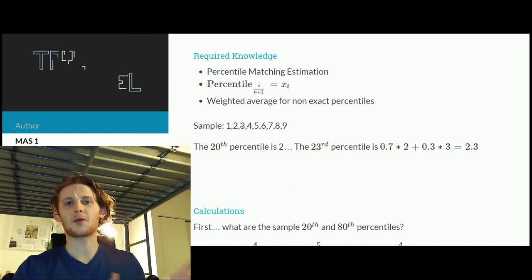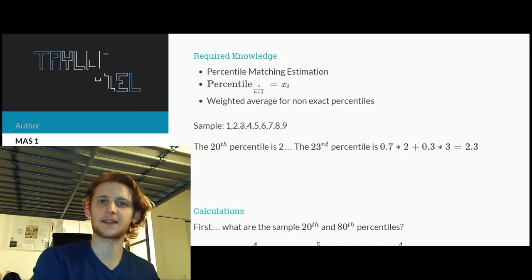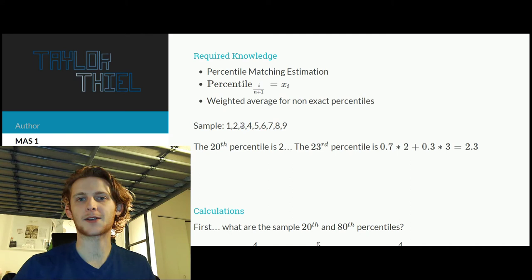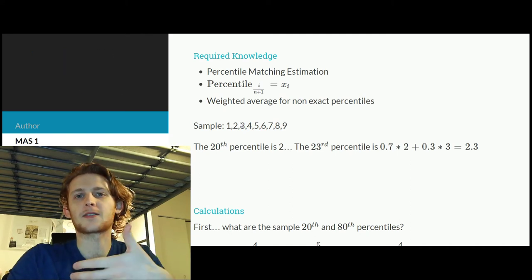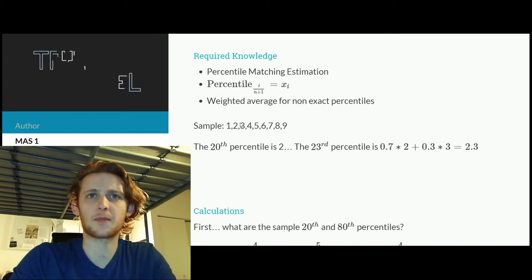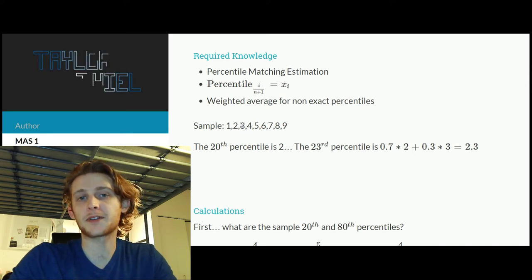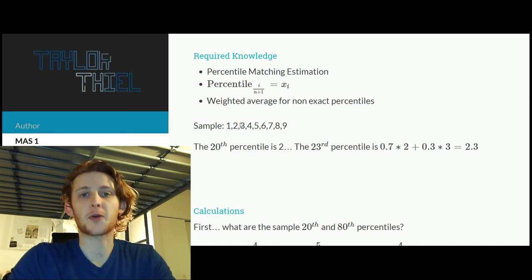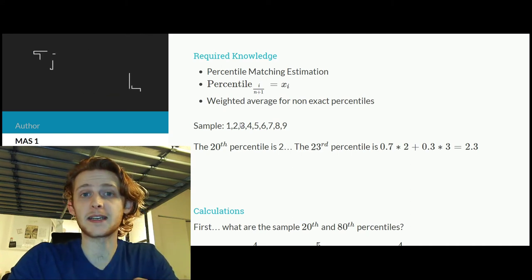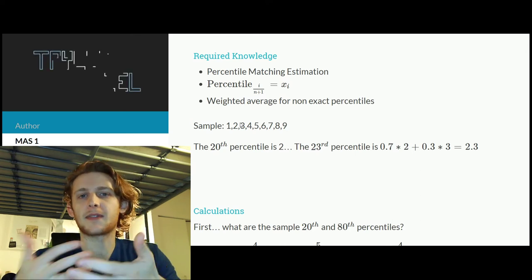So using percentile matching, knowing what your expected percentile is versus your observed, can you then solve for the actual parameters of the distribution? And if you can, then that can serve as an estimation. So for this problem, what we're going to see is that there are two moving parameters, so we're going to use a system of equations.